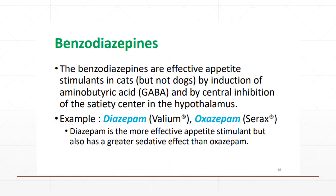Another group of appetite-stimulant drugs are the benzodiazepines. Benzodiazepines are effective appetite stimulants in cats but not in dogs, through induction of GABA (gamma-aminobutyric acid) and by central inhibition of the satiety center in the hypothalamus. Benzodiazepines are not only appetite stimulants — they are mainly used as sedative drugs and are also used as anxiolytic and anticonvulsant agents with minor cardiovascular and respiratory effects. The most commonly used benzodiazepine in veterinary medicine is diazepam, brand name Valium.